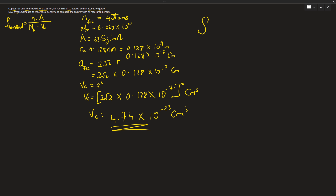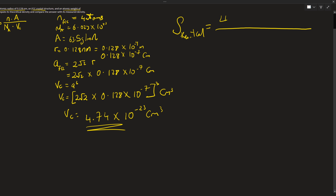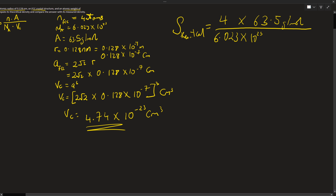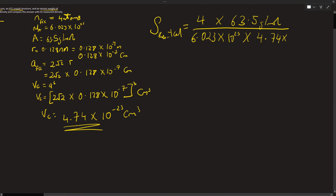Our theoretical density equals the number of atoms (4) times the atomic weight (63.5 grams per mole), divided by Avogadro's constant (6.023 times 10 to the power of 23 atoms per mole) times the volume of the unit cell (4.74 times 10 to the power of minus 23 centimeters cubed). Therefore, our theoretical density equals 8.89 grams per centimeter cubed.